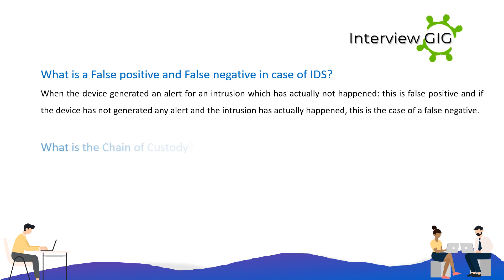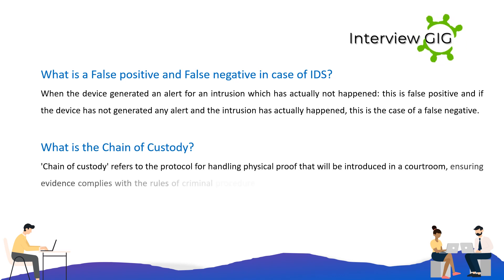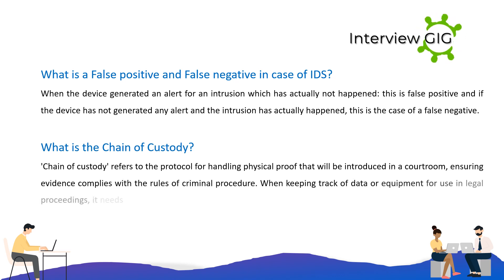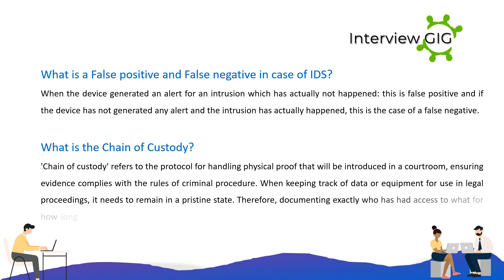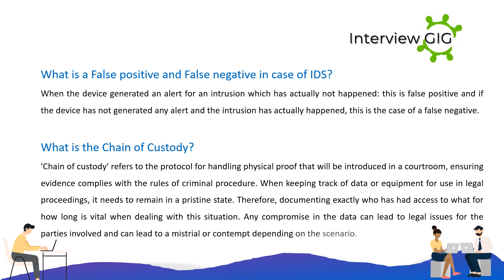What is the chain of custody? Chain of custody refers to the protocol for handling physical proof that will be introduced in a courtroom, ensuring evidence complies with the rules of criminal procedure. When keeping track of data or equipment for use in legal proceedings, it needs to remain in a pristine state. Therefore, documenting exactly who has had access to what, for how long, is vital. Any compromise in the data can lead to legal issues and can result in a mistrial or contempt depending on the scenario.